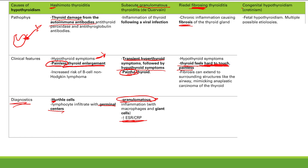Now switching to children: the last cause is congenital hypothyroidism, also called cretinism — hypothyroidism in the fetus. One etiology is antibody-mediated maternal hypothyroidism: if the mother has Hashimoto's, her anti-thyroid antibodies can cross the placenta, attack the fetal thyroid, destroy fetal thyroid tissue, and cause fetal hypothyroidism.